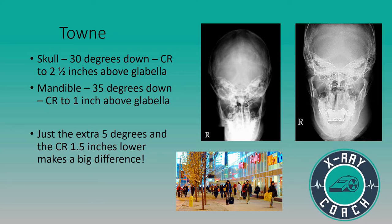For the mandible this is also true, but you're going to be 35 degrees going downtown. Remember, you have to be 30 only to go downtown — if you're older, most likely you're going to get in a fight and break your mandible. So think about that: 35 degrees going downtown, and you're going to center one inch above the glabella. Look at the difference in these images — the one on the right and the one on the left. Just the extra five degrees and centering one and a half inches lower makes a huge difference. Remember: 30 degrees downtown with a two-and-a-half-year-old; 35 degrees is a bad situation for your mandible, centering one inch above the glabella.